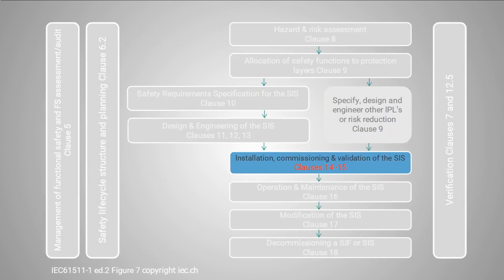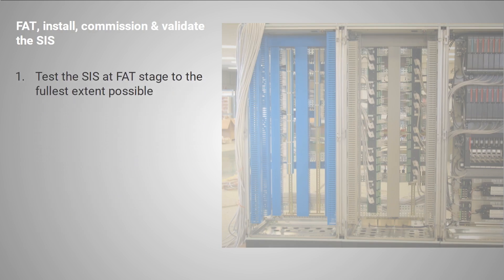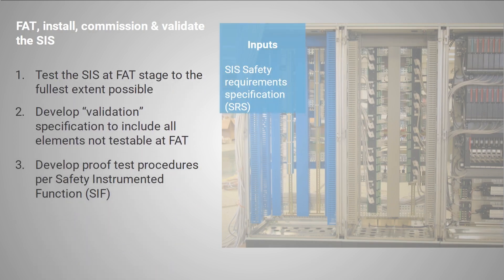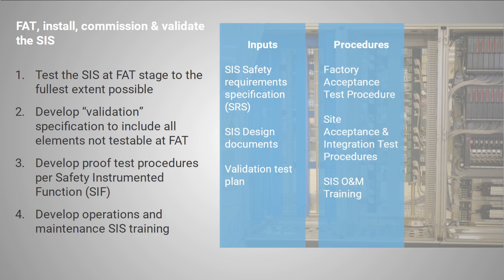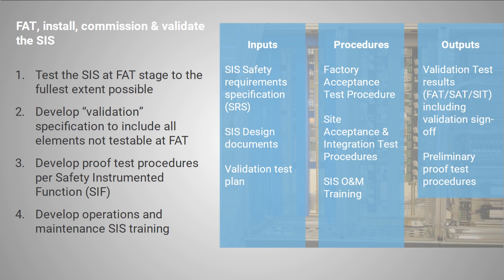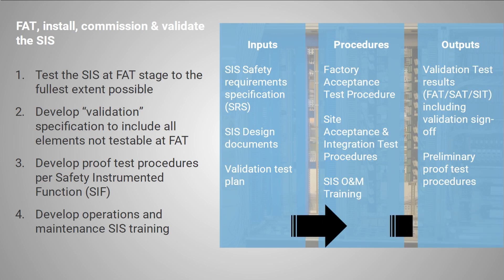Installing SIS equipment often happens after some factory acceptance stage. The critical part of this phase of the lifecycle is to ensure that effective testing has been completed from sensor through to final element for every function. The final validation of the system can only happen at site, with all equipment connected to the process.